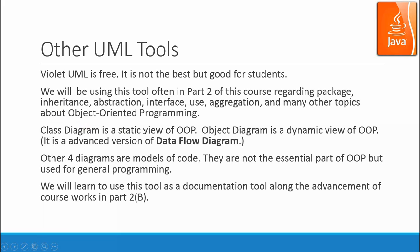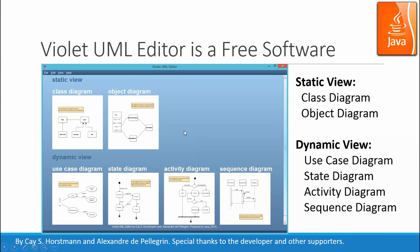Class diagram is a static view of OOP. Object diagram is a dynamic view of OOP. I need to make a clarification here: even though I mention static view and dynamic view, the object diagram is actually in the static view, but it describes how data flows from one class to another.